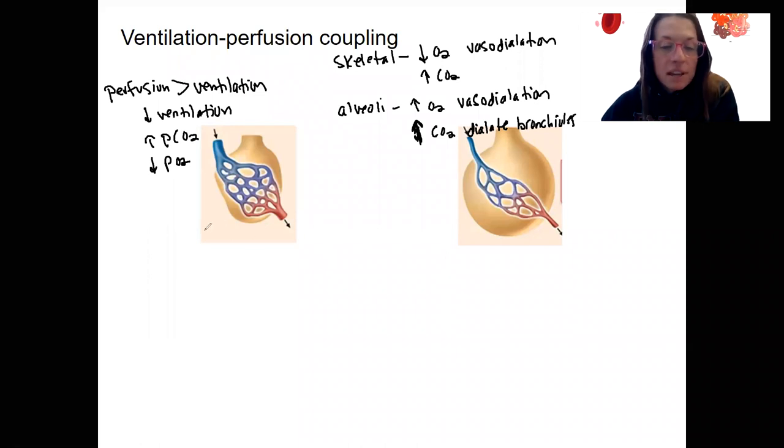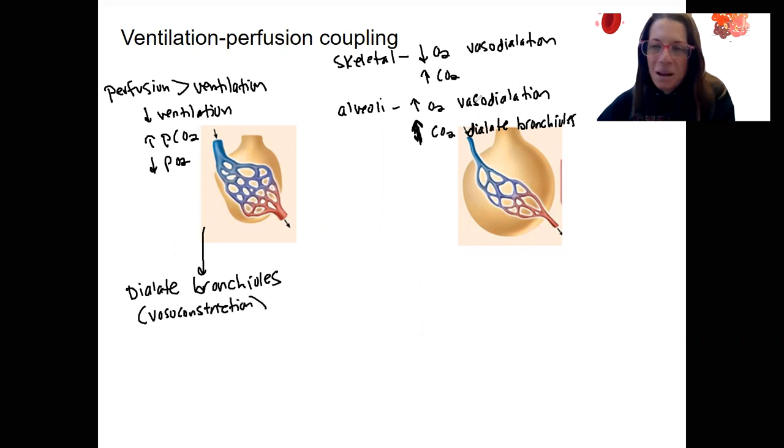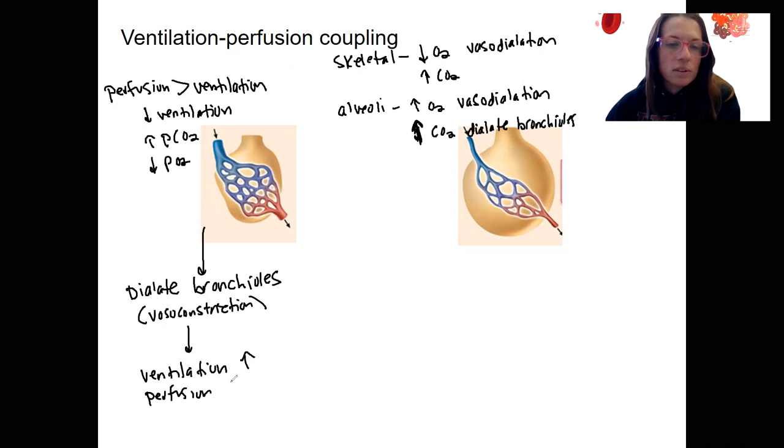So what's going to happen in this case is we're going to have what we have right here. High CO2 is going to dilate our bronchioles, bronchodilation. We also may have some constriction. The opposite of what's happening here, right?